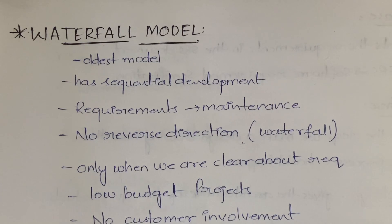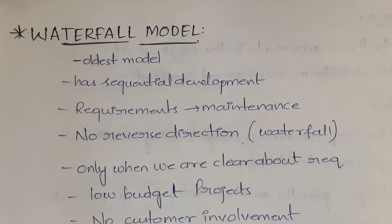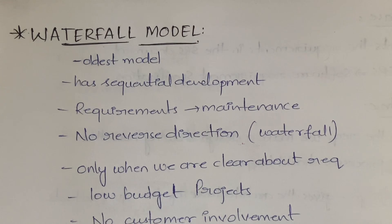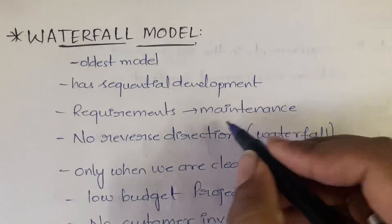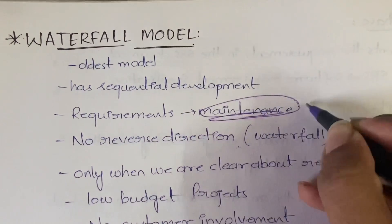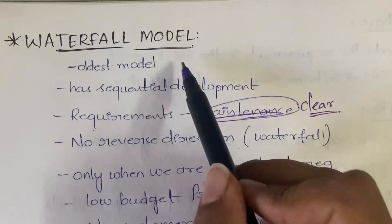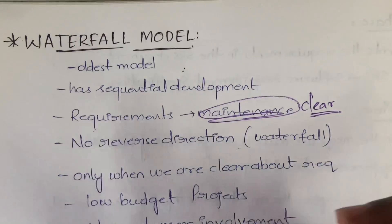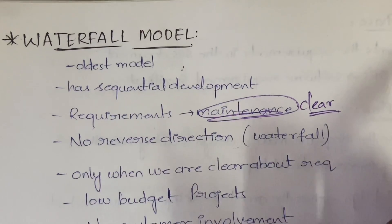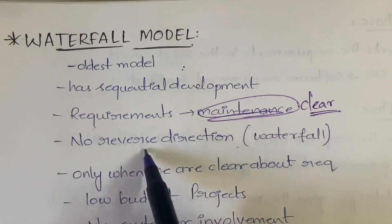First, the Waterfall Model. The Waterfall Model is one of the oldest models we know — it is a very, very old model. It has sequential development, meaning you develop step by step, not all at a time. The requirements should be clear — you can go for the Waterfall Model whenever the requirements of the project are clear and you have perfect clarity.